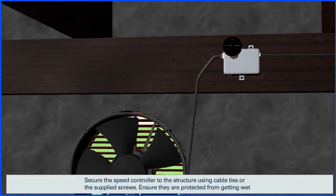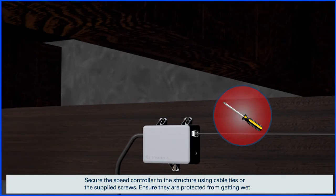Secure the speed controller to the structure using cable ties or the supplied screws. Ensure they are protected from getting wet.